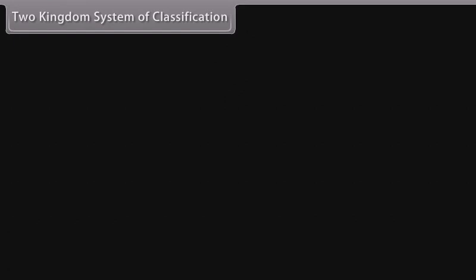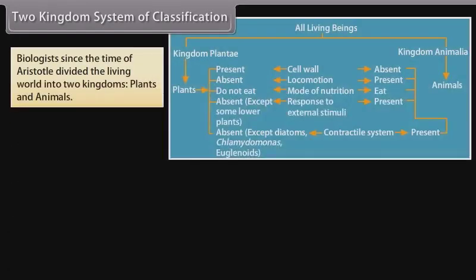Two kingdom system of classification: biologists since the time of Aristotle divided the living world into two kingdoms — plants and animals.